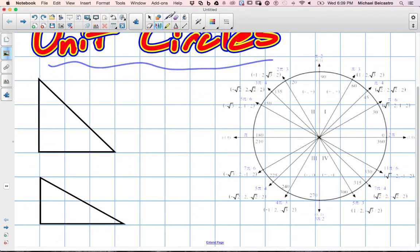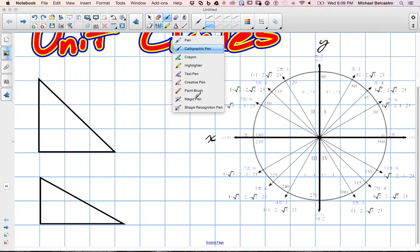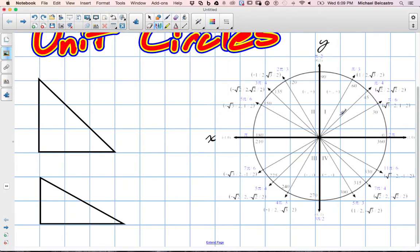A unit circle is a circle built around a Cartesian plane. So you have your x and your y-axis. Those are going to be important because we're going to use those as variables.